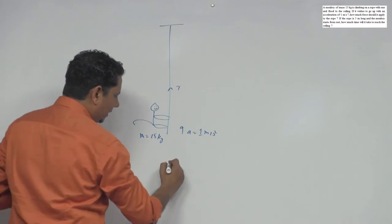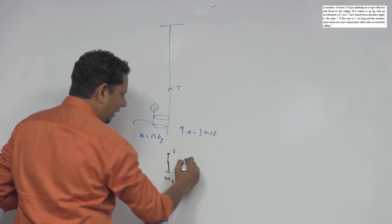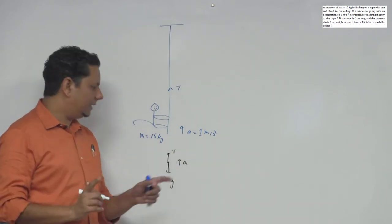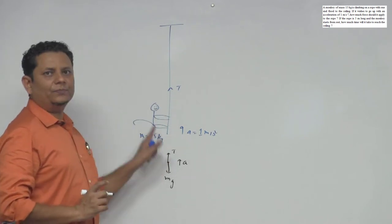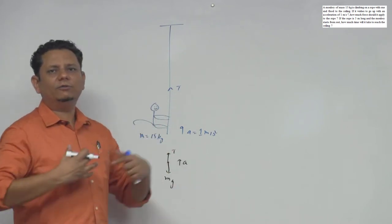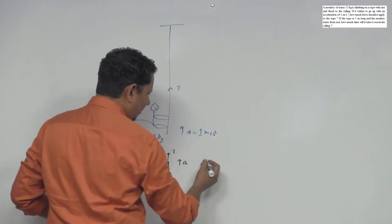So the monkey's FBD: downward force is mg, upward is tension T, and this is your acceleration. The monkey is going up due to this tension, and tension will be the same as the force applied by the monkey. So the equation is T minus mg equals ma.